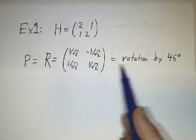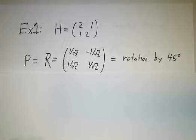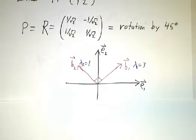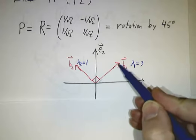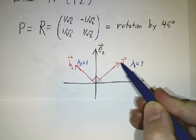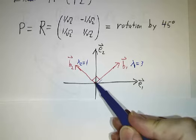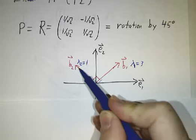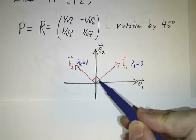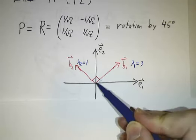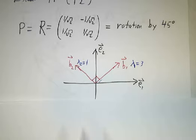And this matrix just gives us a rotation by 45 degrees. So the vector 1 over root 2, 1 over root 2 is pointing in the 45 degree direction. The vector minus 1 over root 2, 1 over root 2 is 90 degrees counterclockwise from that. So what our matrix is doing is it's stretching by 3 in this direction, and it's stretching by 1 in this direction.